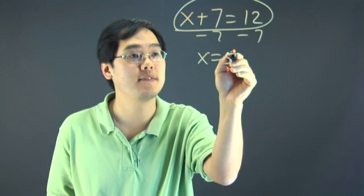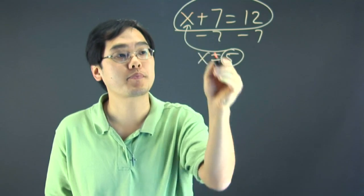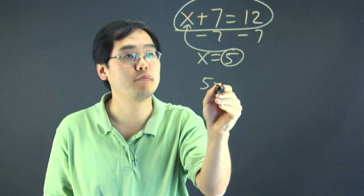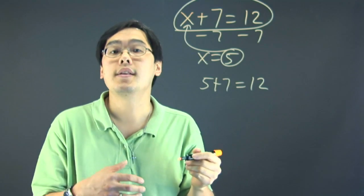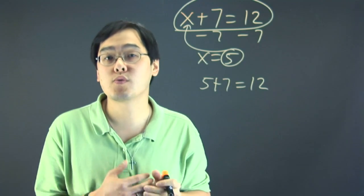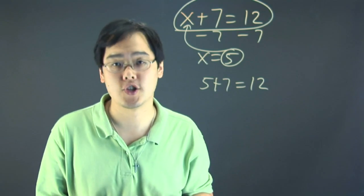So, since x is equal to 5, you can plug it in. You have 5 plus 7 is equal to 12, and obviously that solution checks out. Not every solution works, so it's really important that you want to check every answer that you have.